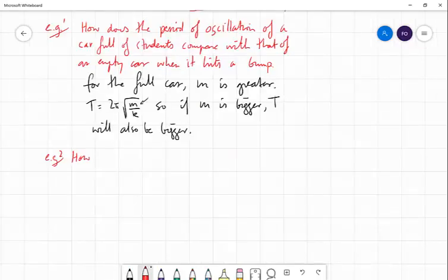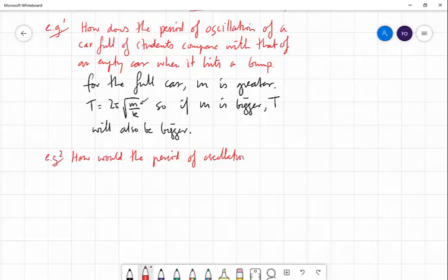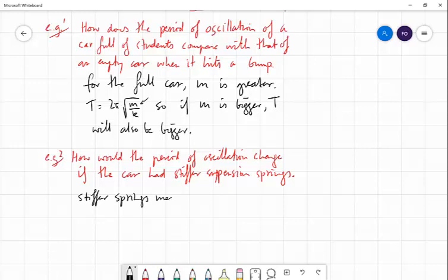That's a fairly straightforward example. How would the period of oscillation change if the car had stiffer suspension springs? So we need to recognize here that stiffer springs means higher spring constant K. T equals 2 pi square root M over K. So if K increases, T decreases.